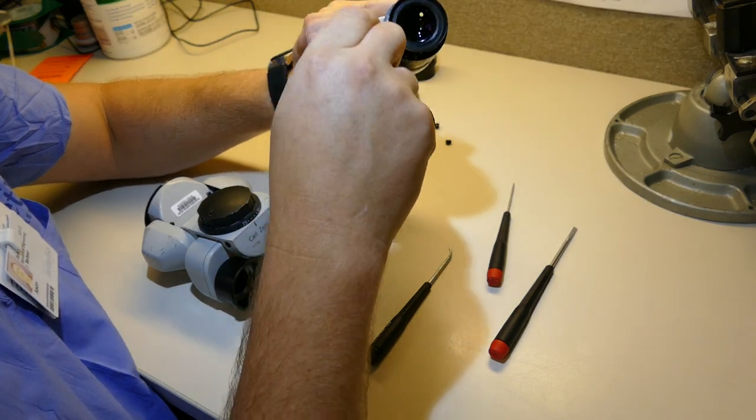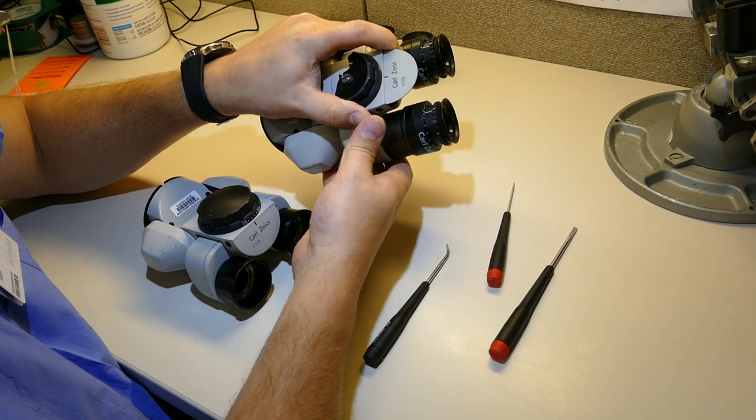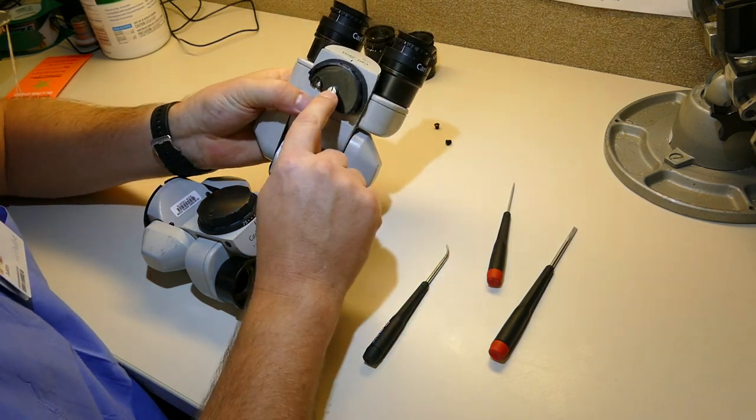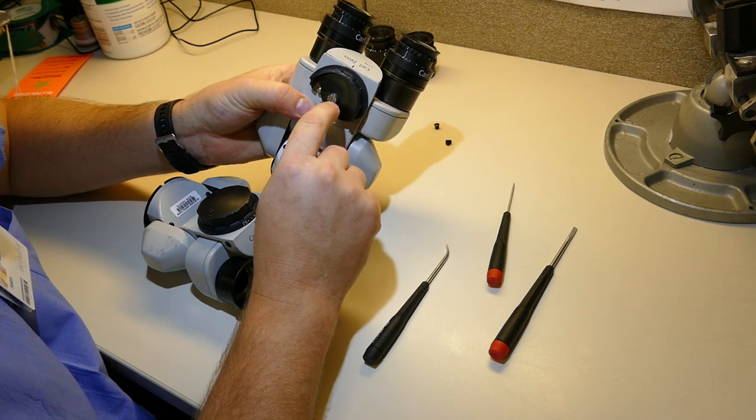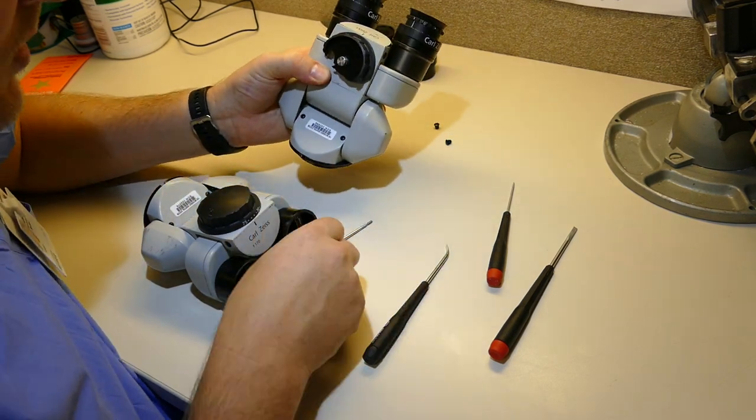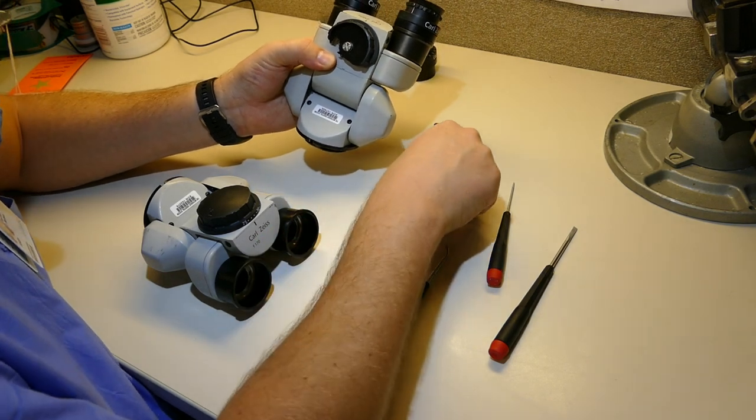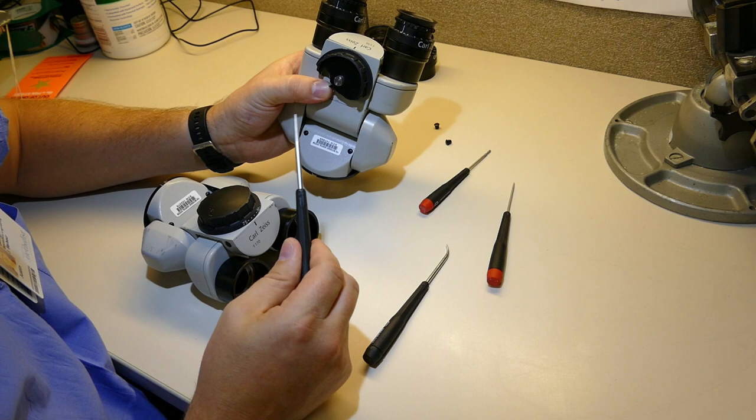We're going to loosen up that set screw. The set screw is holding on a shoulder for the screw right here, which adjusts the tension on your IPD. I'm going to set the set screw aside. Now we're going to take a flat head screwdriver.